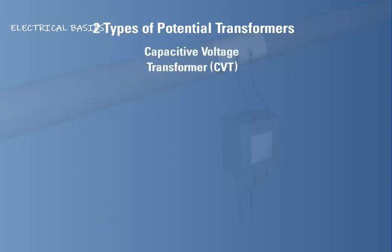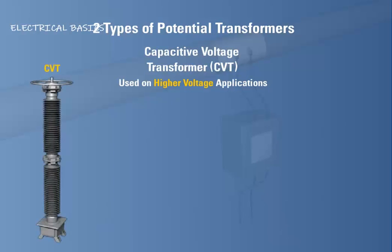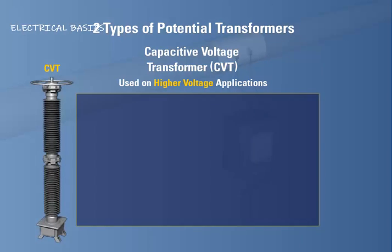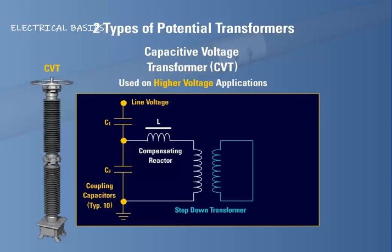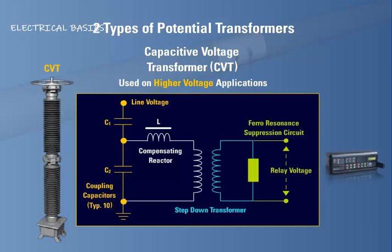Capacitive voltage transformers, or CVTs, are normally used on higher voltage applications. The CVT is basically a capacitance potential divider and consists of the following components: coupling capacitors, typically 10; a compensating reactor; a step-down transformer; and a ferroresonance suppression circuit found just before the output terminals for connecting to a relay.